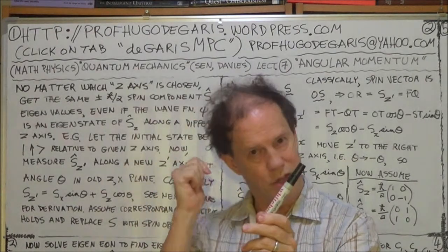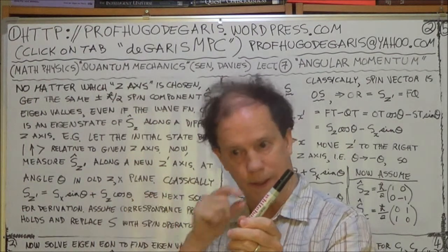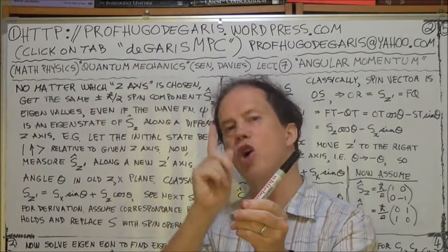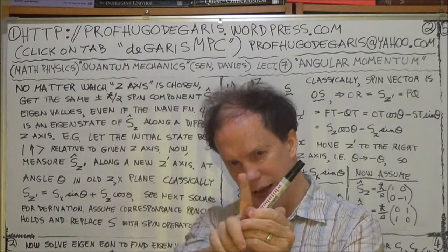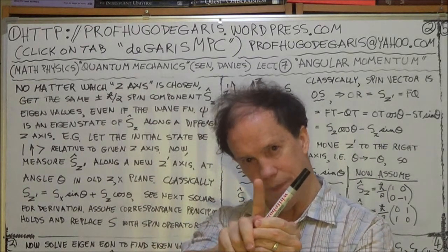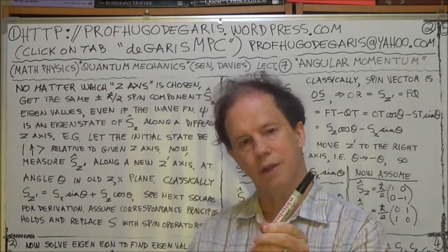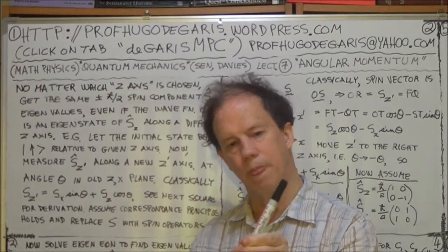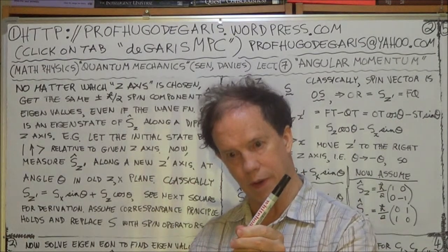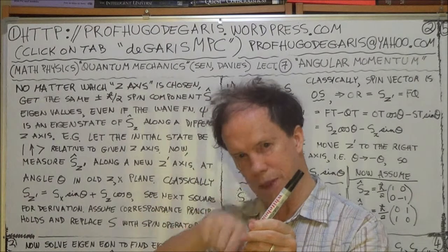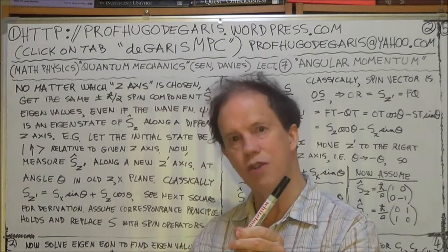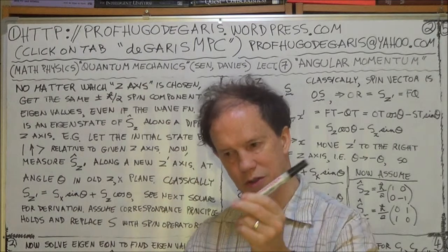And no matter what, what's interesting, and we'll show it in this session and the next, no matter what that angle is, that angle theta, you will still get the two eigenvalues of spin up and spin down. You will still get those two components, irrespective of the angle, which is interesting.